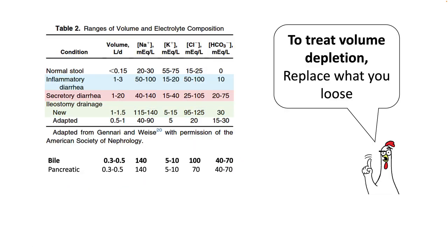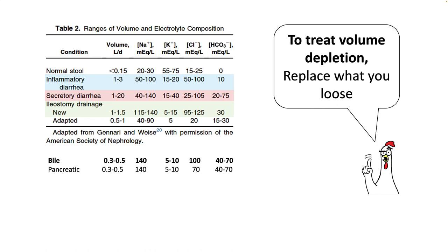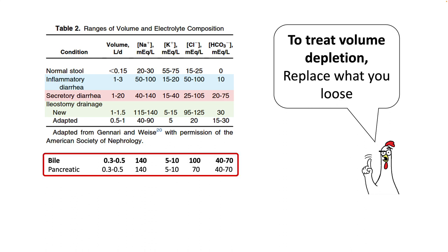To treat volume depletion, replace what you lose. So you have to know the electrolyte composition of various body fluids. For example, in secretory diarrhea, you lose around 20 to 75 mEq of bicarb. While in biliary and pancreatic juice, you lose around 40 to 70 mEq of bicarb.